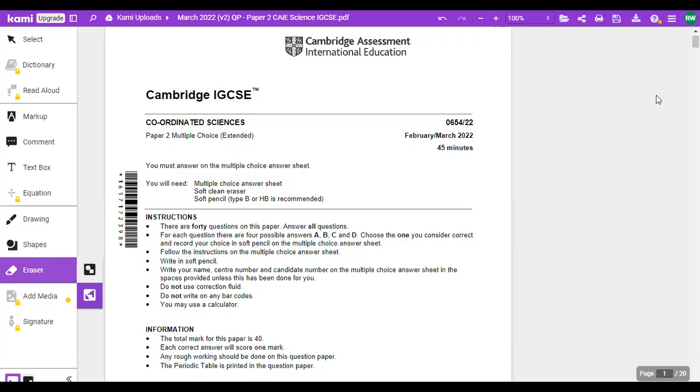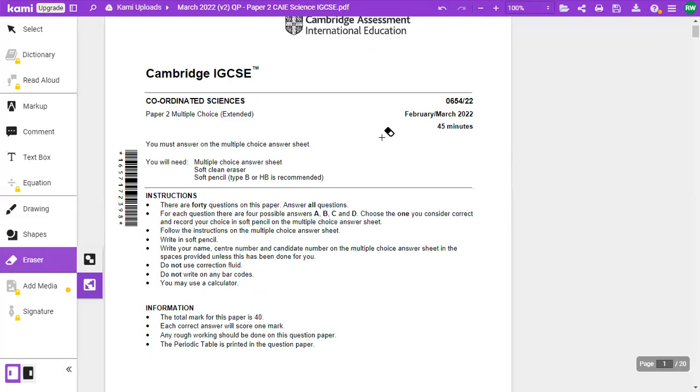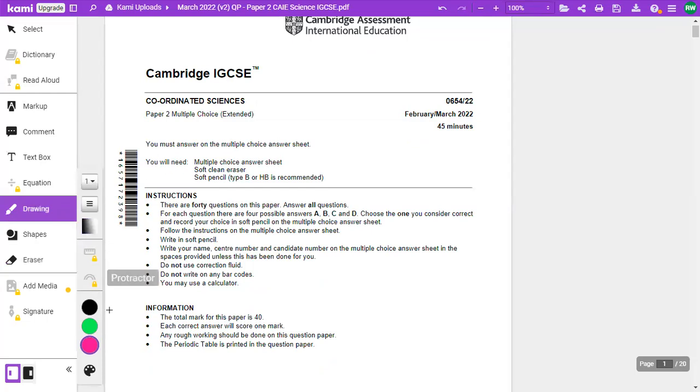Okay, so hi everyone. We're going to look at a paper two for coordinated science. So this is the extended paper. It's 45 minutes long, and you have 40 questions. So that means that you will have around one minute per question. So you need to work quickly, but remember some questions take less time than others. So you've got 45 minutes.